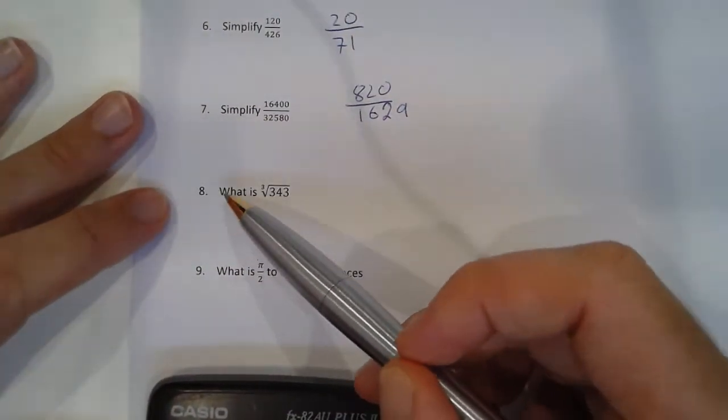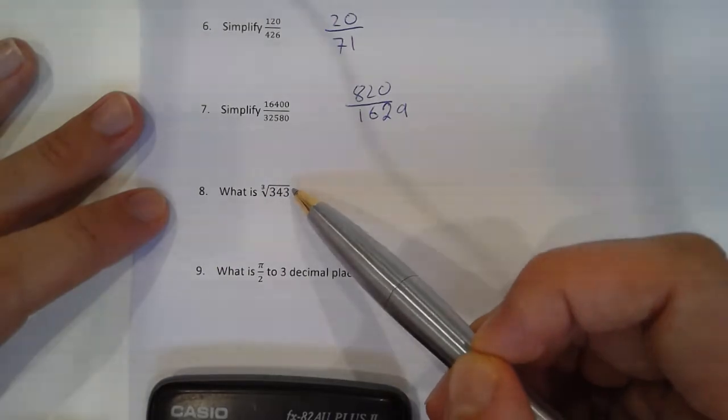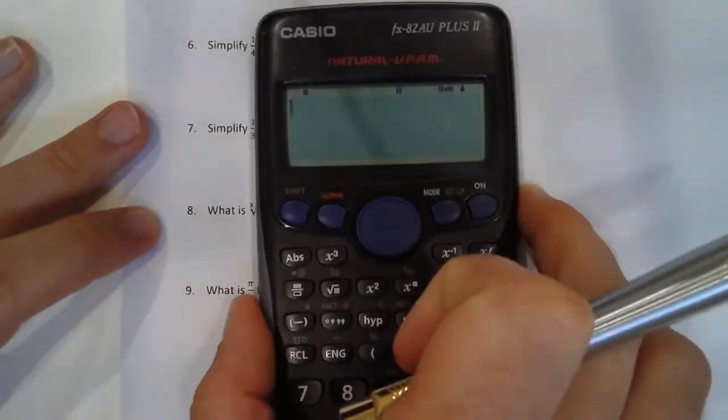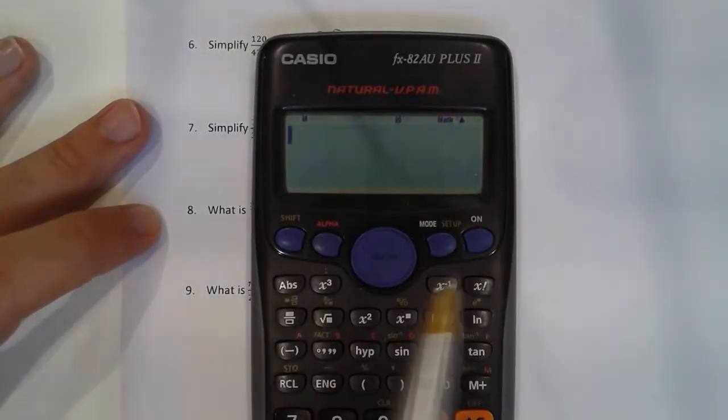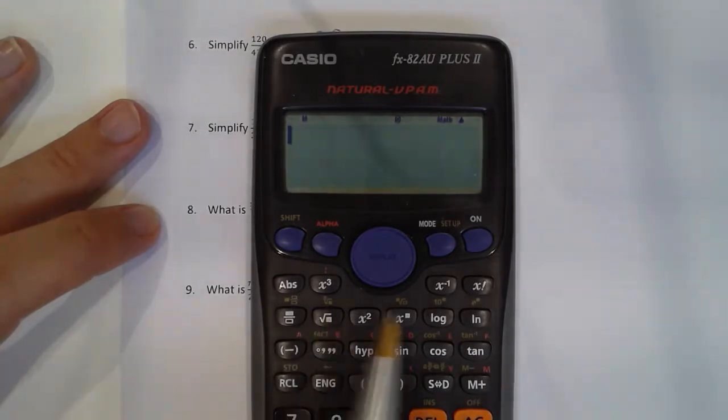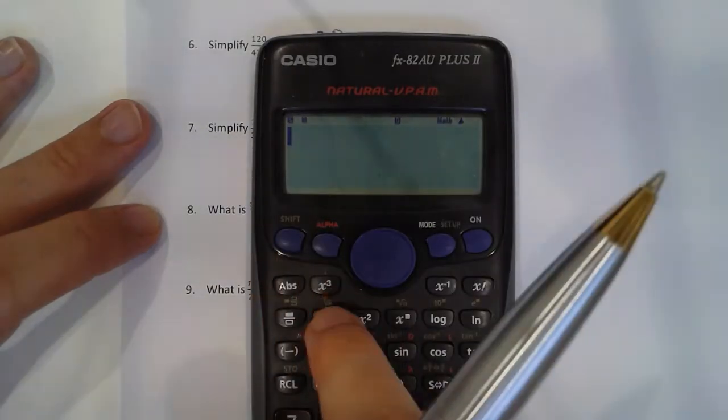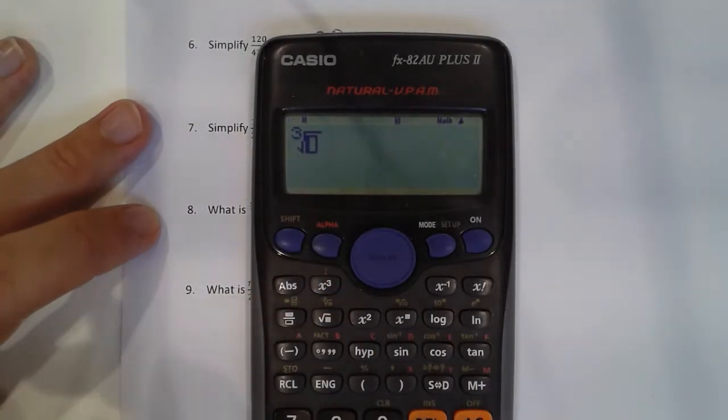Number 8. What is the cube root of 243? Now your cube root button is either shift square root, there it is in yellow, or you can use this one when you're doing more than 3, more than the cube root. So if I type in shift square root, you can see it's already set up the cube root.